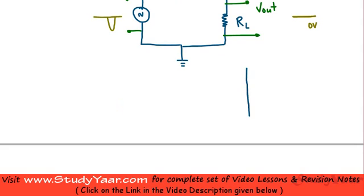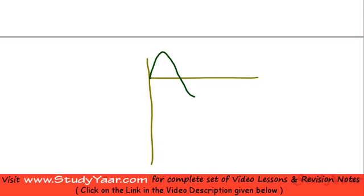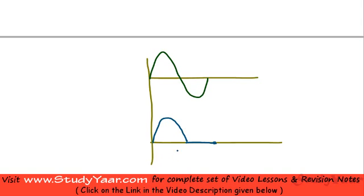Let me draw you the input and output waveforms. My input waveform basically looks like this — I have a simple sinusoidal voltage. My output waveform looks like this: during the positive half cycle, I have my sinusoidal voltage, and during the negative half cycle, I do not have any voltage. Obviously, this is a repeating waveform.